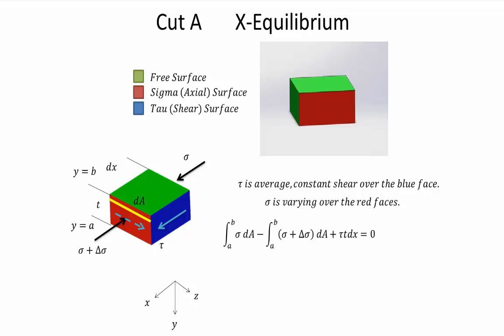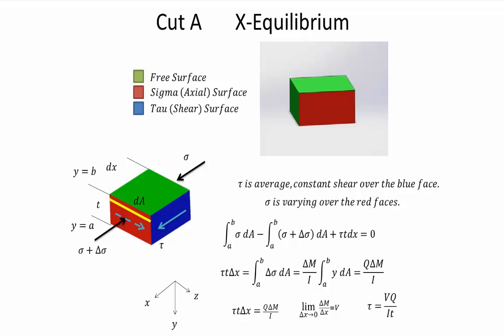If we do a sum of forces equation, we have tau times the thickness times dx for its contribution to the force, but we need to integrate sigma and sigma plus d sigma over the red face. With a little manipulation, we find that tau is equal to VQ over IT, where V is the shear force, Q is the first moment of area of the area at the cut, I is the moment of inertia of the cross section, and T is the thickness of the cut.